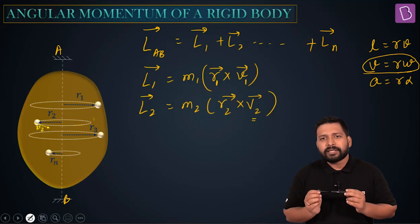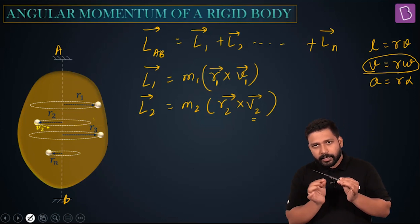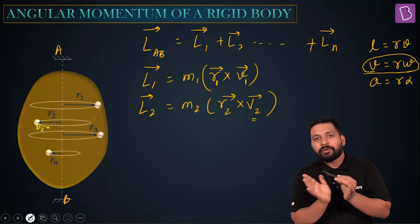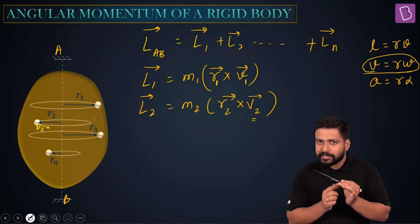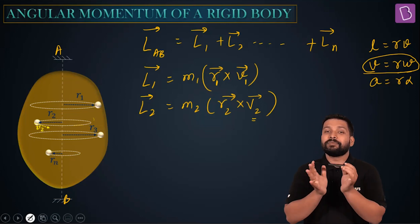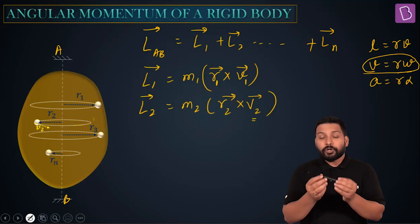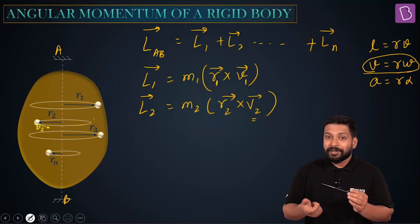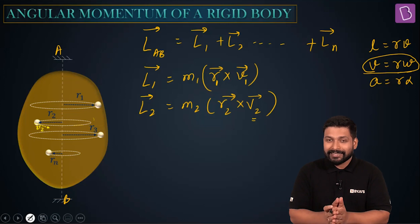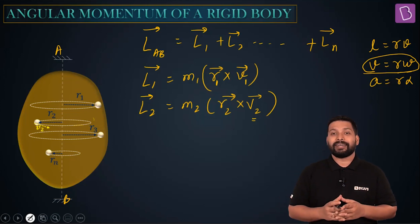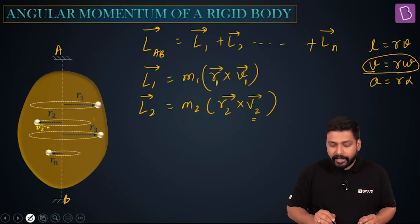For example, take a stylus and start rotating it. For each of the individual particles, the linear velocities will be different, but if one point has moved through an angle of 30 degrees, every other point also subtends the same angle. So angular displacement is 30 degrees for all of them. Dividing by time gives the same angular velocity. So for a rigid body, the angular velocity for each individual particle is exactly the same.